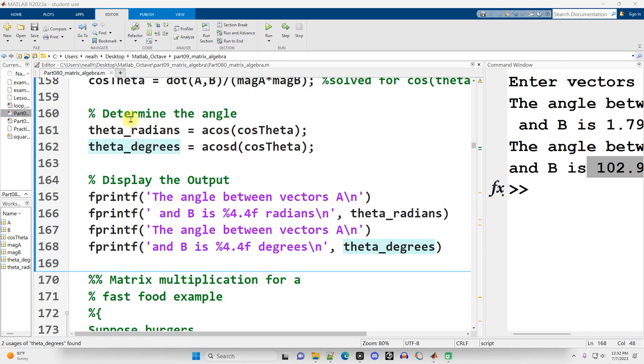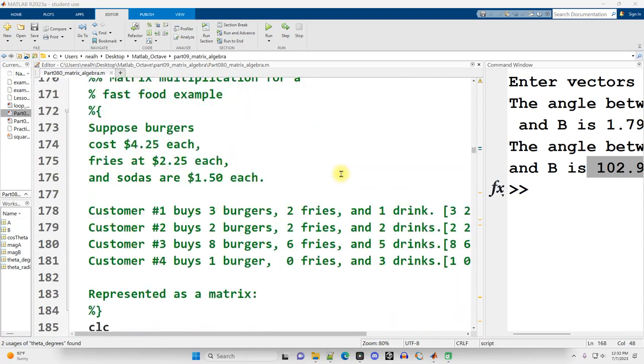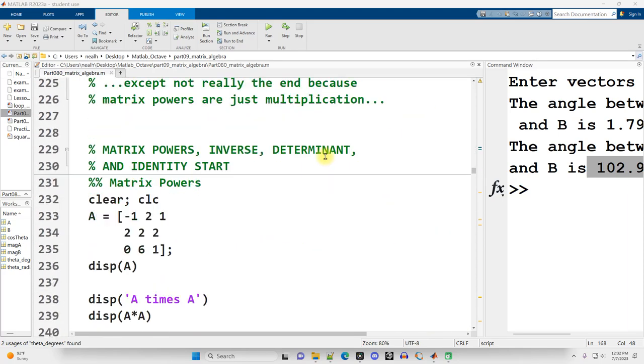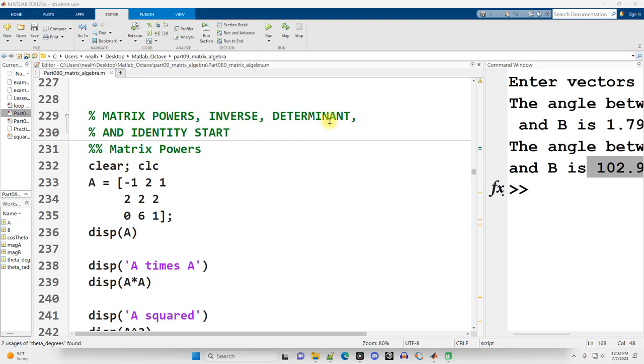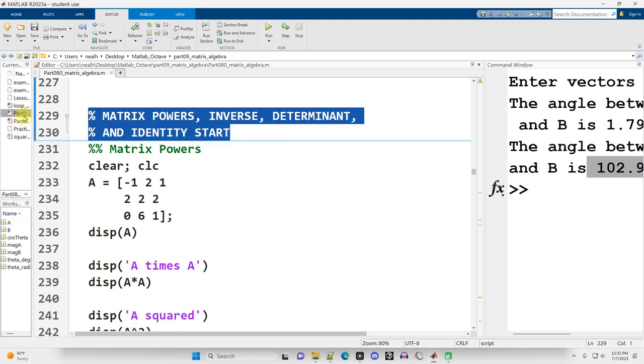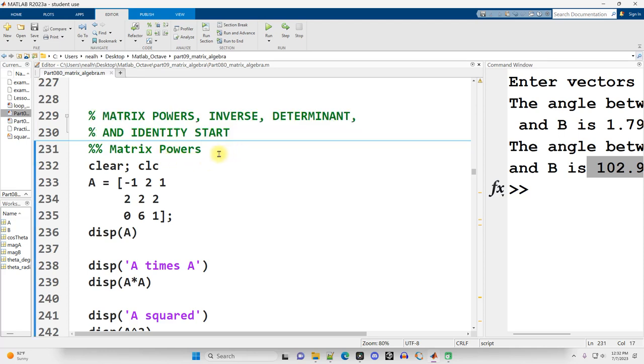This video is picking up right where the previous video left off. We are still in part 080 matrix algebra. I'm scrolling down to the matrix powers, inverses, determinant, and identity section around line 230. All the code I'm going to show you here will work perfectly in Octave just as it does in MATLAB with some very minor exceptions which I will note when I get to them.